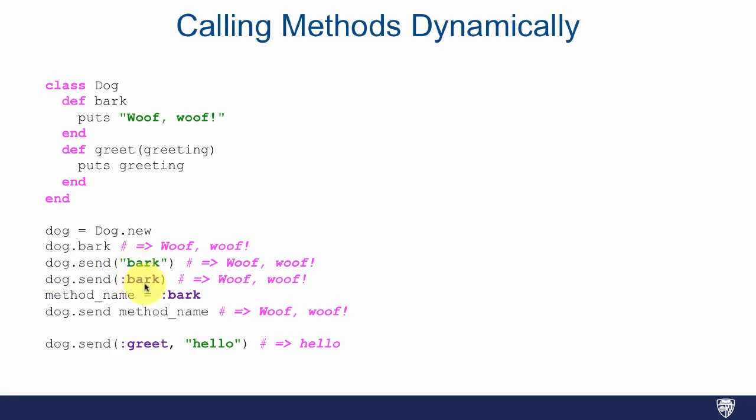And you could also do the same thing with a symbol instead of a string. And you could imagine that you could also have a variable method_name that gets assigned either a symbol or a string, and then you could use that variable method_name to send the message, which obviously is the same thing as bark. And if you want to send a message to the greet method and pass in the parameter, you just pass that in as a second parameter.